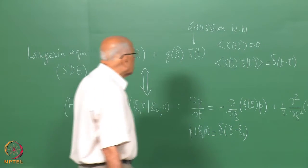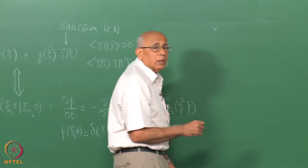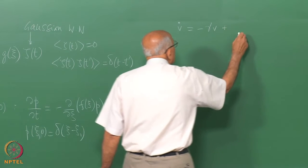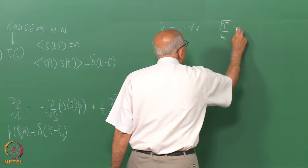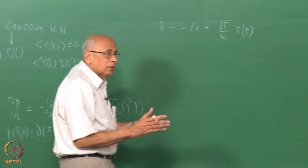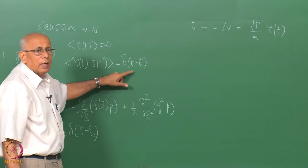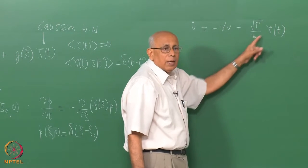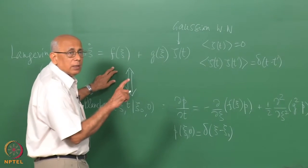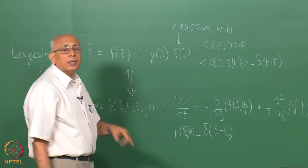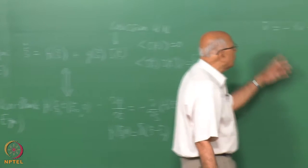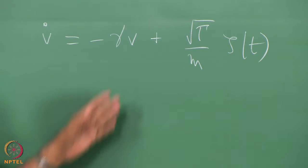For instance, we considered the velocity process: one Cartesian component of the velocity of a Brownian particle satisfies the equation v-dot equal to minus gamma v plus square root of gamma over m times zeta of t. Here F of psi is a linear function: it is minus gamma v, and g of psi is a constant. This is called additive noise because you are adding noise whose strength is independent of the value of the random variable — it is a pure constant.